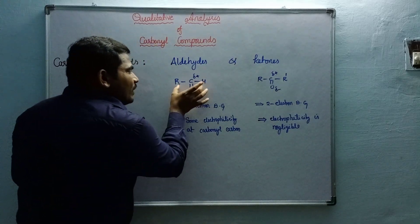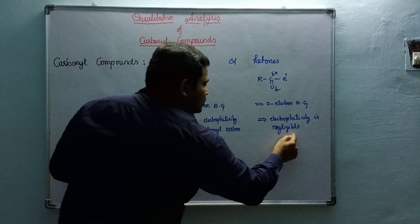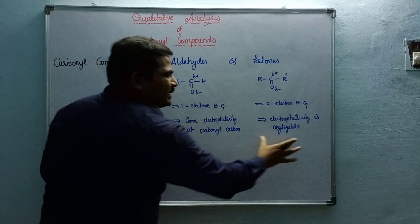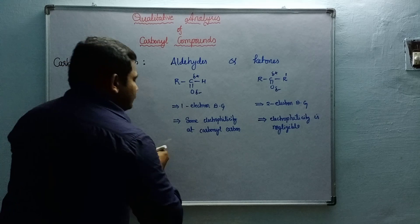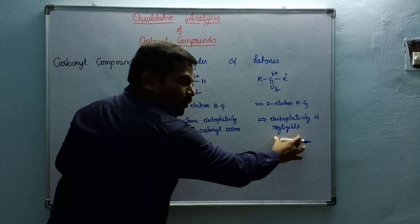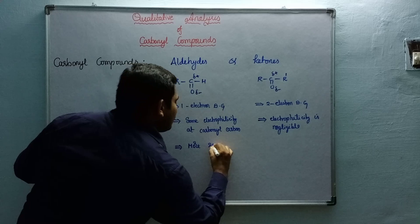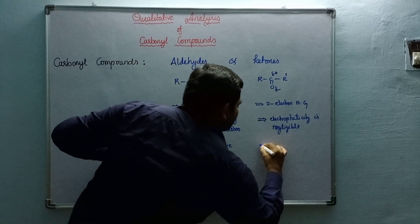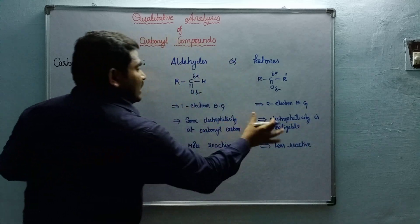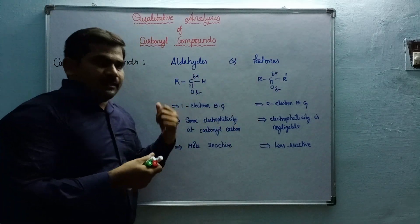In an aldehyde, with only one electron-donating group, there is some electrophilicity at the carbonyl carbon, so the aldehyde acts somewhat electrophilic and is looking for a nucleophile. In a ketone with two electron-donating groups, it is not electrophilic. That is why aldehydes are more reactive and ketones are less reactive.